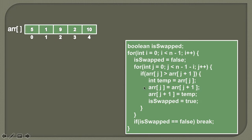In our previous lecture, we saw the demonstration of the algorithm where we discussed that we start comparing adjacent elements. If they are in wrong order, we simply swap them. When we complete one particular iteration, the largest element tends to sink to the bottom of the array. We also discussed that with each iteration, we keep track of the swapping — if no swap is done in any particular iteration, we know the array is already sorted.